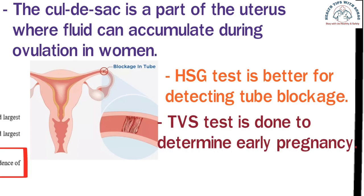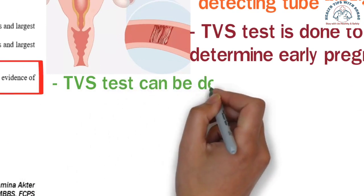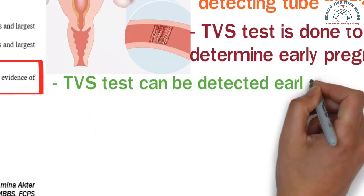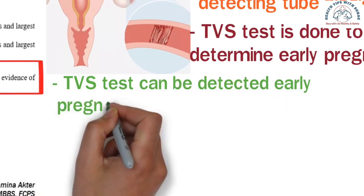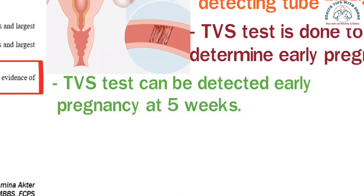Generally, trans-abdominal sonography cannot detect pregnancy before 7 weeks. However, with a TVS test, pregnancy can be detected at 5 weeks. Sometimes a TVS test is done to detect the fetal heartbeat in early pregnancy. Therefore, the TVS test is also used for the determination of early pregnancy and ectopic pregnancy.